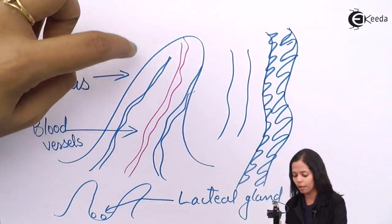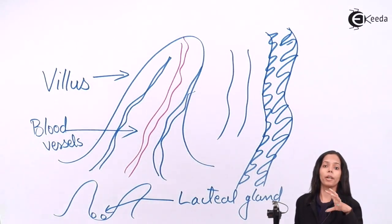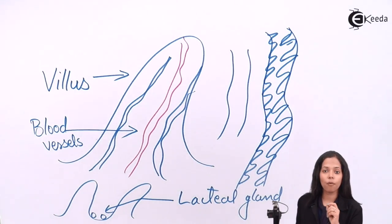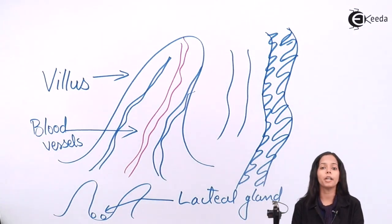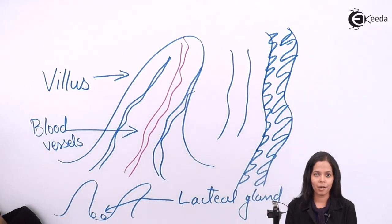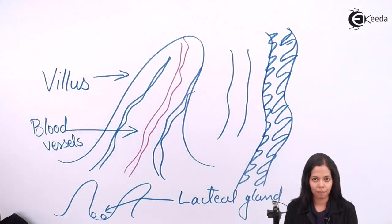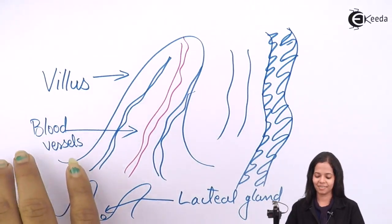If small intestine had fat deposition on its surface, on the lining, absorption of nutrients would be blocked. That is why there is a presence of lacteal gland which absorbs all the fats and converts it into cholesterol, which is used for the formation of lipids. Lacteal gland is a type of lymphatic organ. This is all about the structure of small intestine.